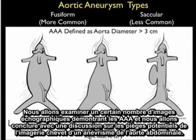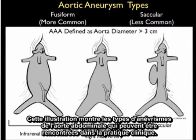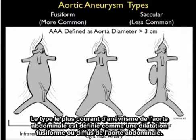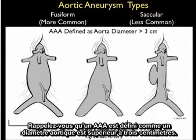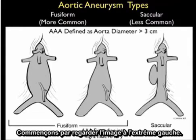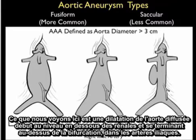This illustration shows the types of abdominal aortic aneurysms that may be encountered in clinical practice. The more common type is defined as fusiform or diffuse dilatation of the abdominal aorta. Remember that a AAA is defined as an aortic diameter greater than 3 centimeters. Here we see a diffuse dilatation of the aorta beginning at the level below the renals and ending just above bifurcation into the iliac arteries.